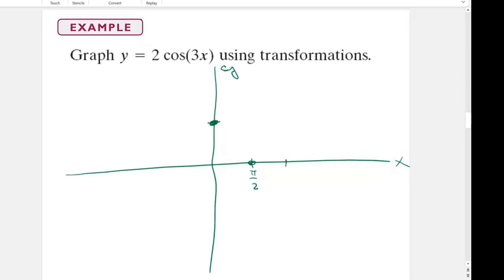At pi it's negative one. At three pi over two it's zero, and at two pi it's one. There it is.